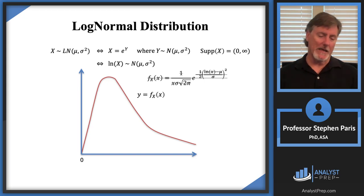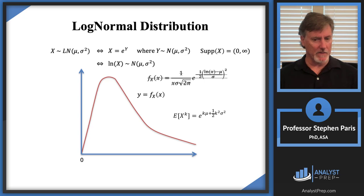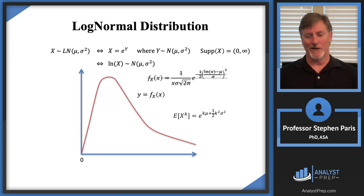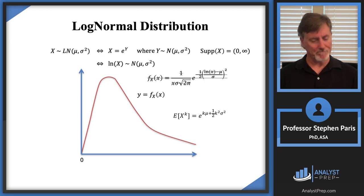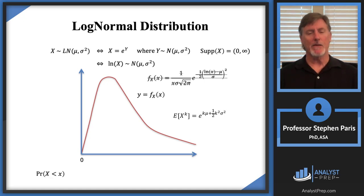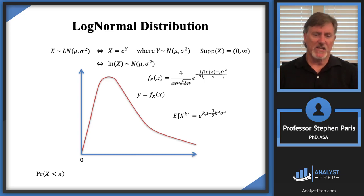If you want to memorize the formula for the moments of the log-normal distribution, you can. The k-th moment is E[X^k] = e^(kμ + k²σ²/2). If asked for the variance, take the second moment (k=2) minus the square of the first moment. You're more likely to be asked about probabilities, but the moment formula isn't hard to memorize and is easy to apply.